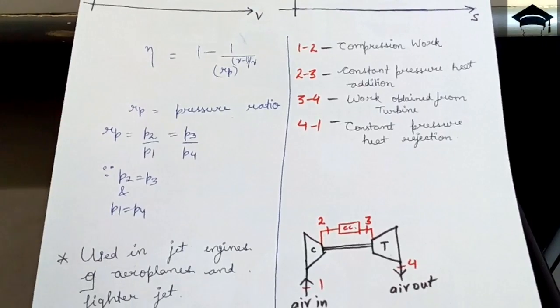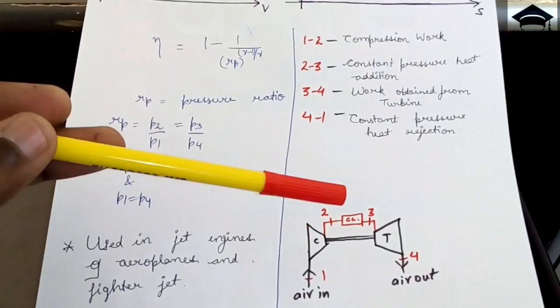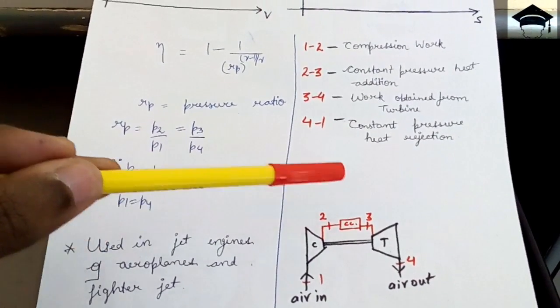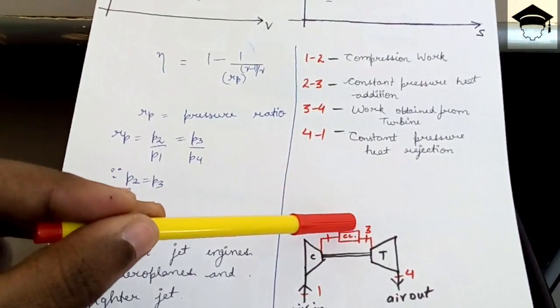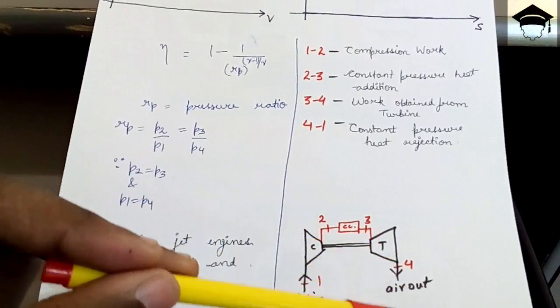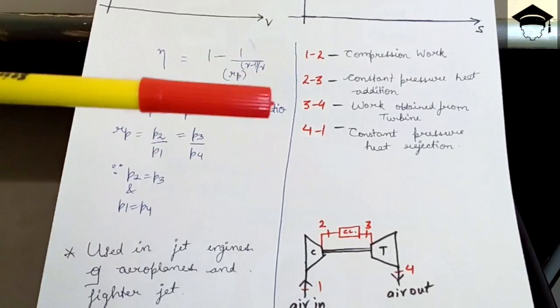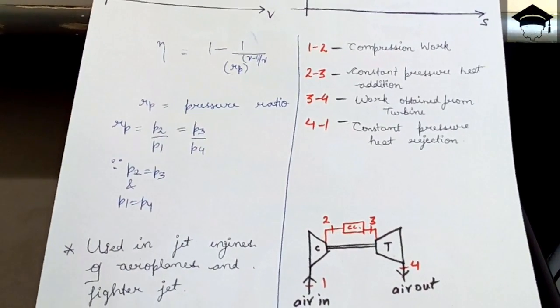And then the exhaust of the combustion, the exhaust from the combustion is passed from three to four through the turbine. So you obtain the useful work from the turbine.